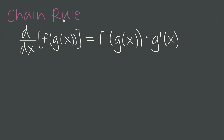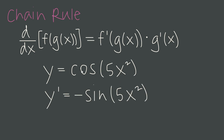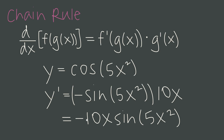The last of our four super important rules is chain rule — how we differentiate composite functions where g(x) is inside f(x). The derivative is the derivative of the outside function f, leaving g completely alone, multiplied by the derivative of the inside function. For example, y = cos(5x²): cosine is the outside function and 5x² is the inside function. We take the derivative of cosine, which is negative sine, and leave the inside function alone as 5x². Then we multiply by the derivative of 5x², which is 10x. Bringing 10x in front gives us −10x · sin(5x²) as our derivative. We always have to be careful to apply chain rule whenever we're differentiating.